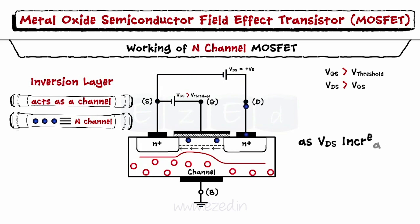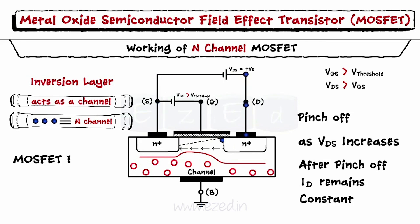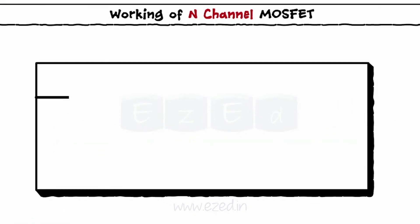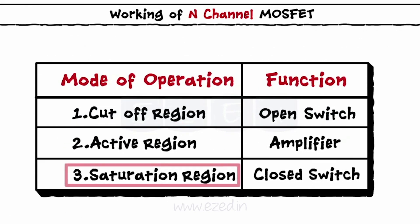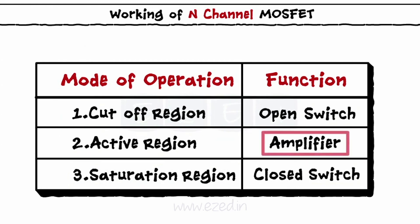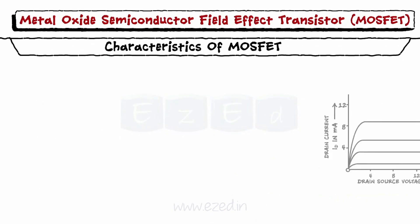Increasing the VDS further, we reach a point where the channel width starts to decrease at the drain terminal and the channel gets tapered and is transformed into a single point. After this point, even if we increase the VDS, ID remains constant and the MOSFET goes into saturation mode. Thus, we can summarize the working of the MOSFET in the following table. When it is in cut-off mode or saturation mode, it acts as a switch, and when it is in the active region, it acts as an amplifier. Thus, we observe the following characteristics for the enhancement MOSFET.